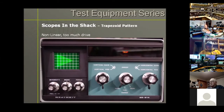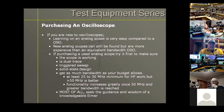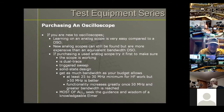Hopefully I've convinced you that having a scope in a shack is important. If you're new to scopes, you're best off getting an analog to learn on — you can still get them out there, often for free. Get as much bandwidth as you can afford. If purchasing an analog scope, make sure it's working, get a dual trace with triggered sweep, make sure it's solid state. Get as much bandwidth as you can for your budget — you want a minimum of 25 to 30 MHz, but 50 MHz or greater is even better.